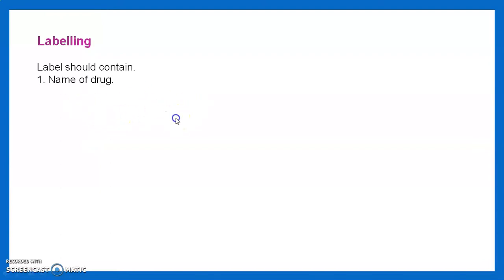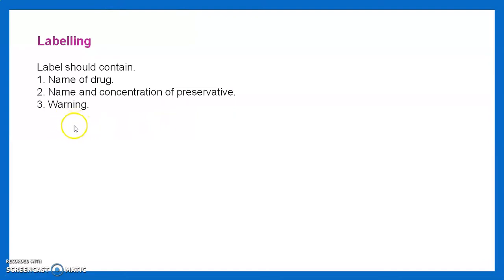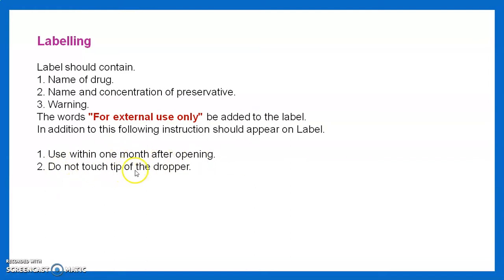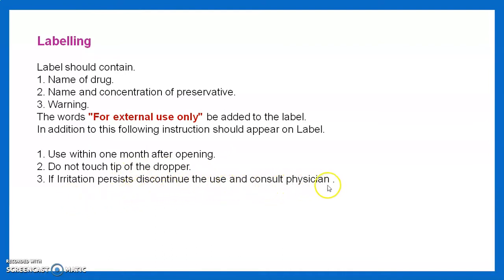Labels should contain the name of the drug, name and concentration of preservatives, and a warning for external use only. Additional instructions on the label include: use within one month after opening, do not touch the tip of the dropper, and if irritation persists discontinue use and consult a physician. All these labels must appear on the final container.